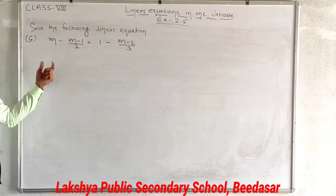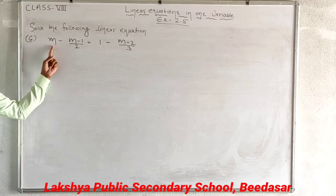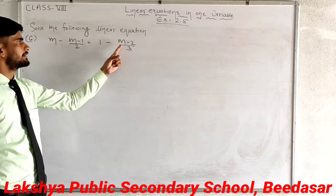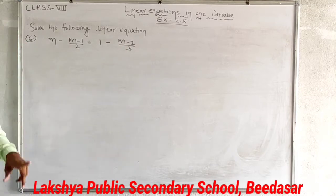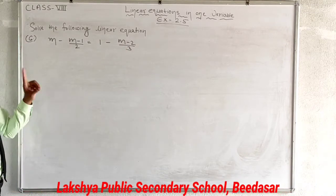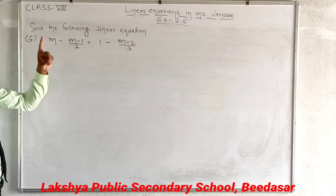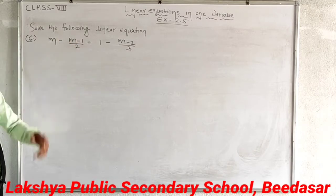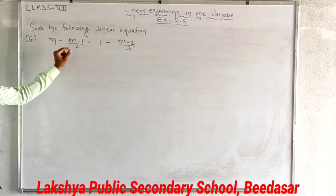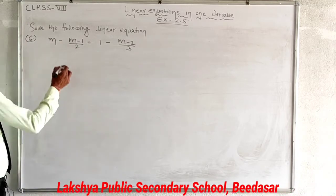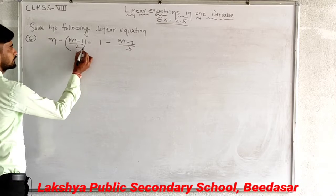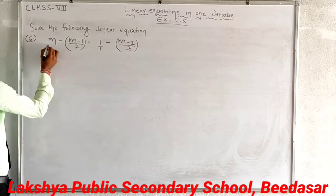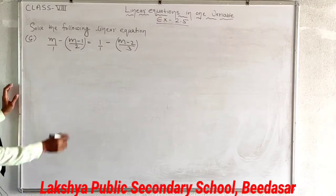Our next question, number 6: m minus (m minus 1) upon 2 equals 1 minus (m minus 2) upon 3. As mentioned before, you must put the expressions in brackets. If you don't use brackets here, your answer will definitely be wrong 100%. So first put them in brackets, then your answer will be correct.